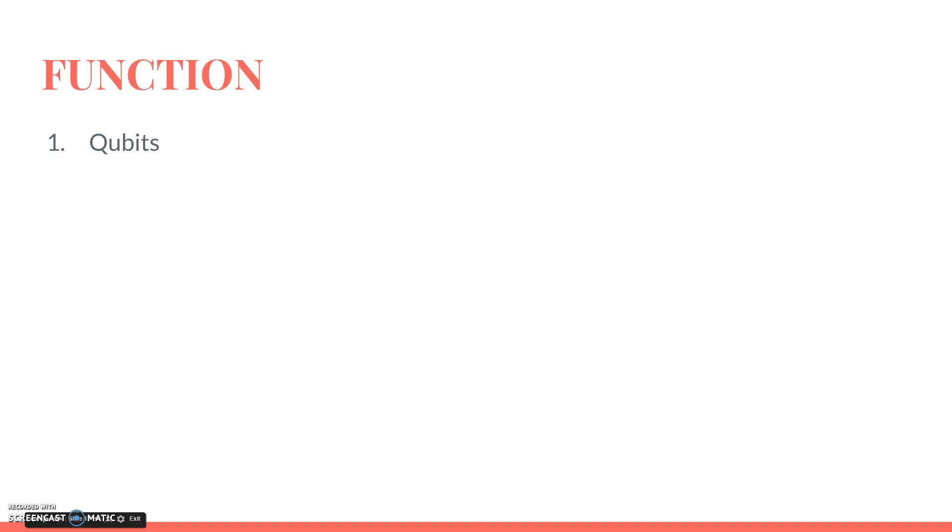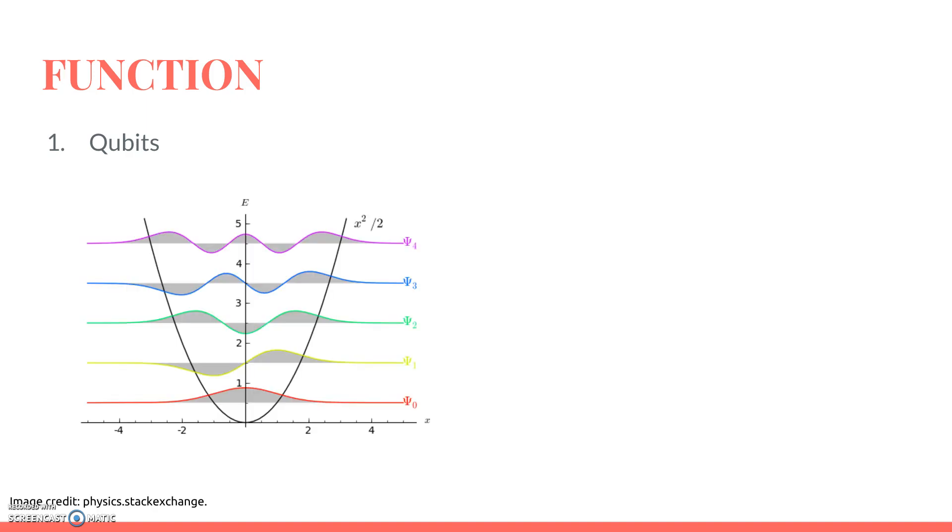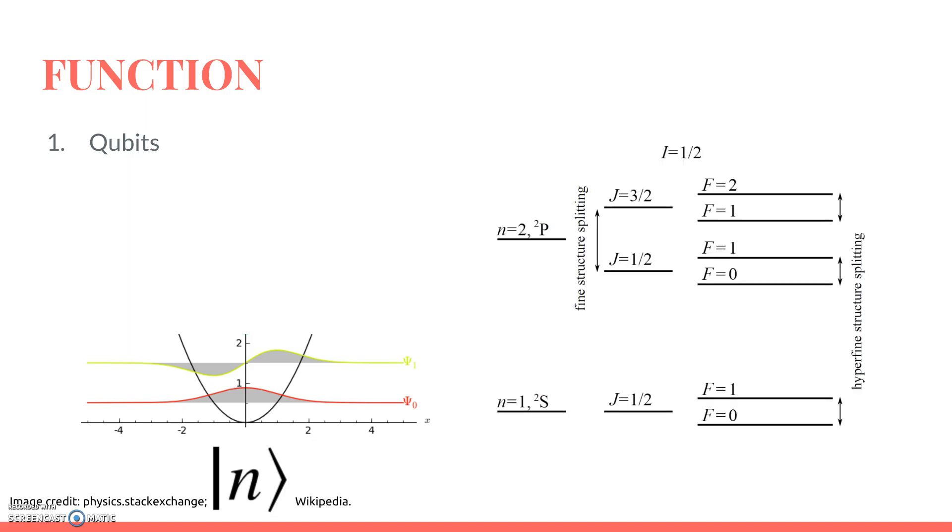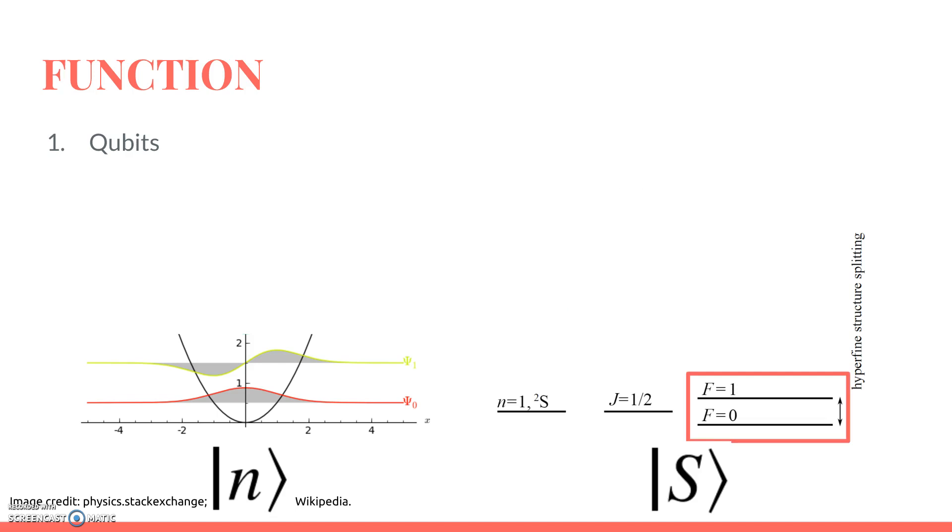As for the existence of qubits, a single trapped ion actually has a couple two-level systems which can be treated and manipulated as qubits. The first of these depends on where the ion falls in its spectrum of harmonic oscillator states. If sufficiently cool, this becomes a two-level system of ground state and first excited state. Furthermore, the ground state of the ion splits into two states by hyperfine interactions, which can also be identified as a two-level qubit system.